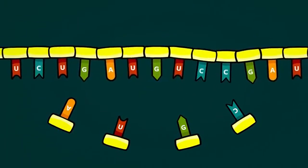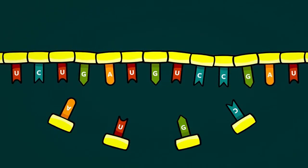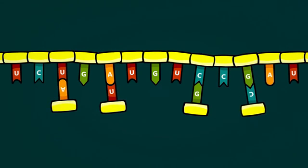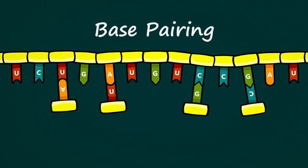...are attracted to other bases, sort of like a magnet, but they're selective about who they will stick to. G selectively pairs with C, A selectively pairs with U. When bases find their matches and stick together, we call it base pairing.